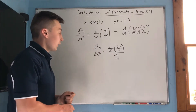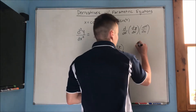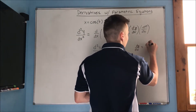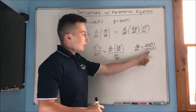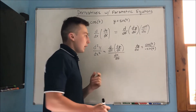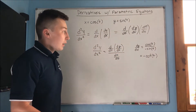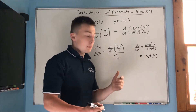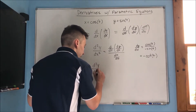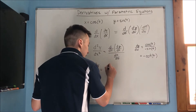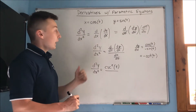Let's apply this to our equations. dy/dx equals cos(t) over negative sin(t), which is the same as negative cot(t). Taking the derivative of negative cot(t) with respect to t gives csc²(t). So the second derivative equals csc²(t) over dx/dt, where dx/dt is negative sin(t).